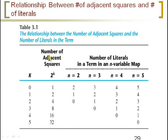The number of adjacent squares is 2 to the power K. If K equals 1 — that is, one adjacent cell — in a two-variable map the number of literals is 2. If the adjacent cells are 2, the number of literals in the resultant expression is 1. If adjacent cells are 4, you get 0 literals and the output is 1. The same pattern extends for n equals 3, 4, 5 variables.